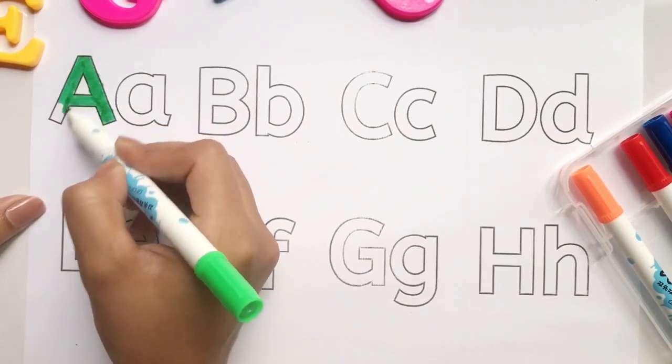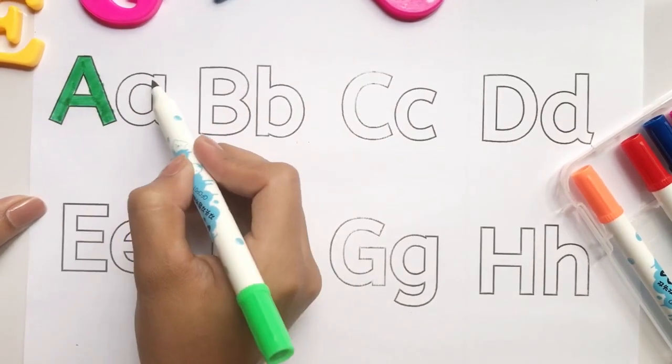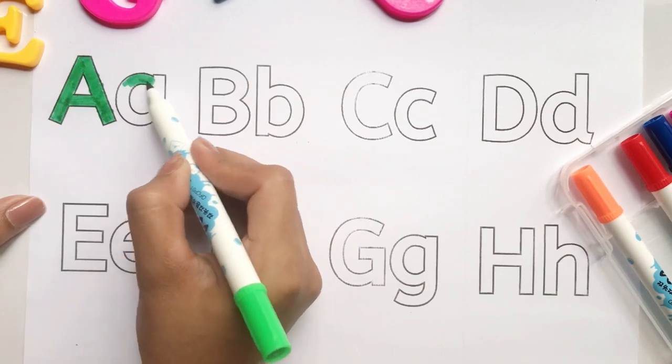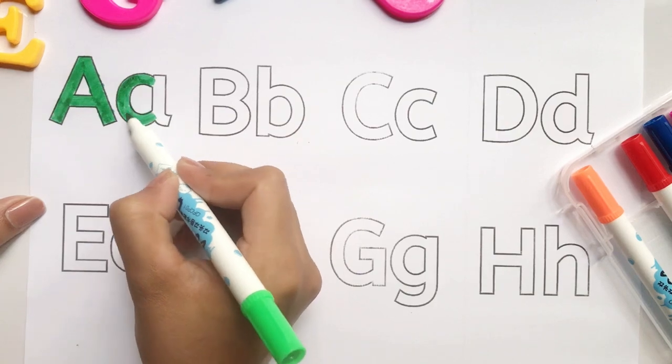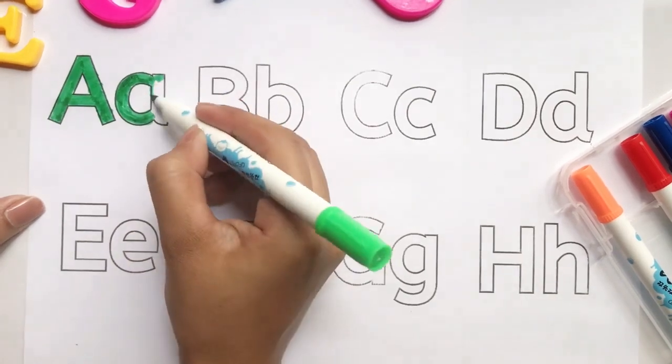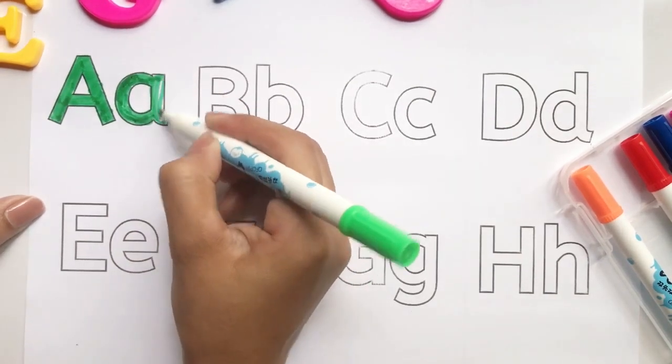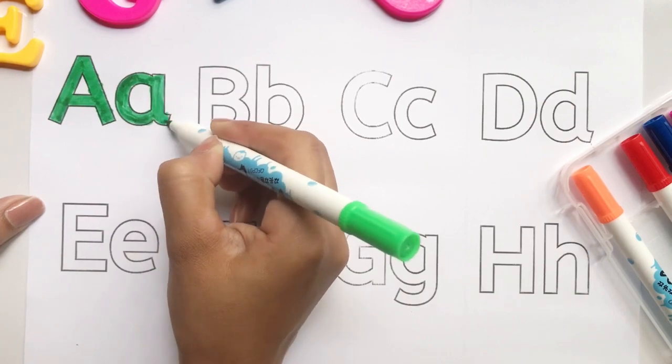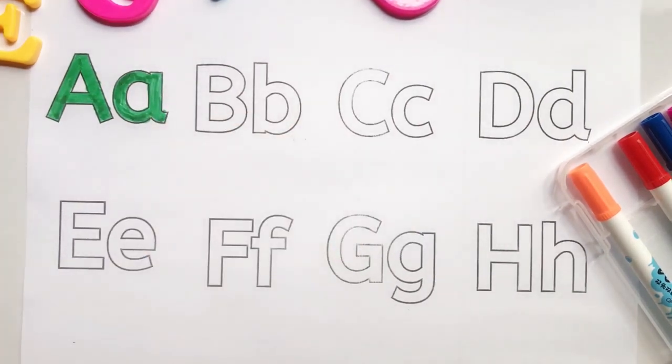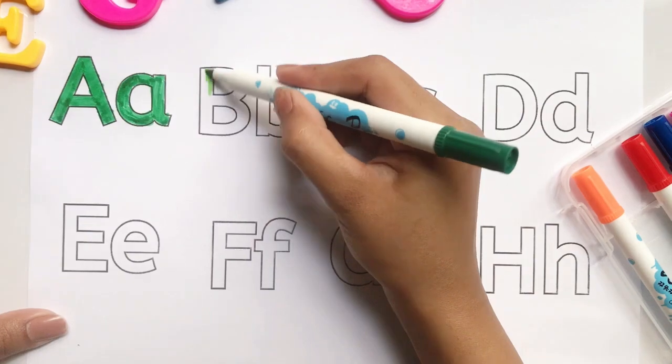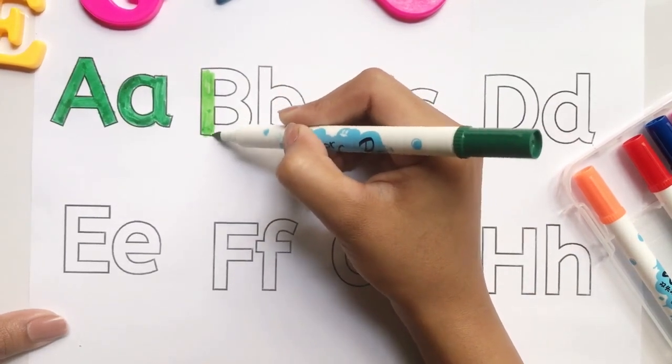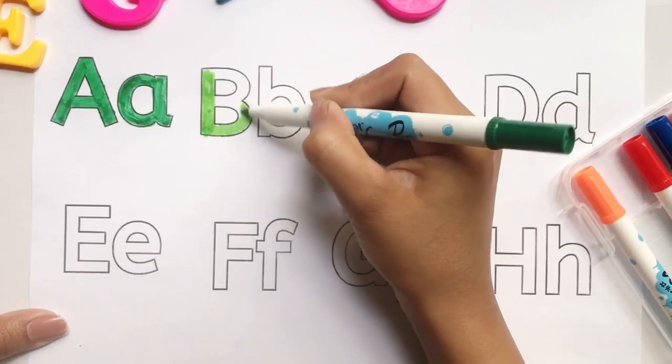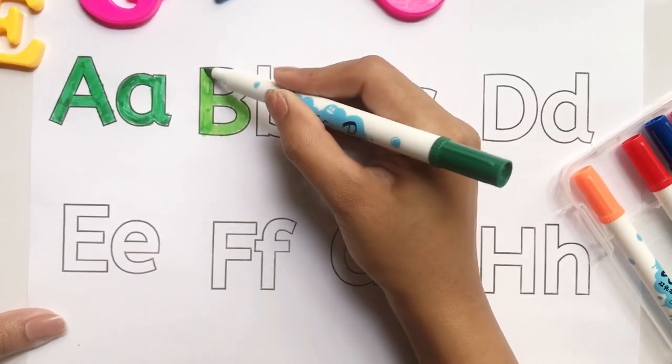A. A for and. A, B, C, D, E, F, G, H, I, J, K, L, M, N, O, P, Q, R, S, T, U, V, W, X, Y, Z. Now I know my ABCs. Next time won't you sing with me.